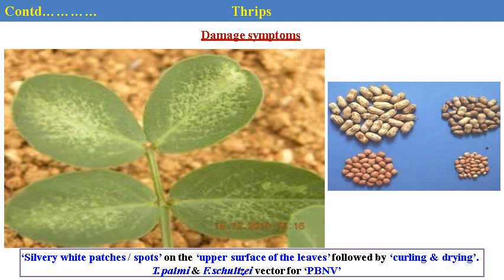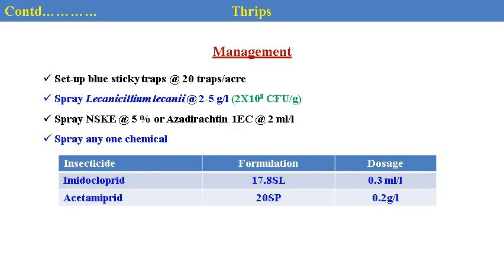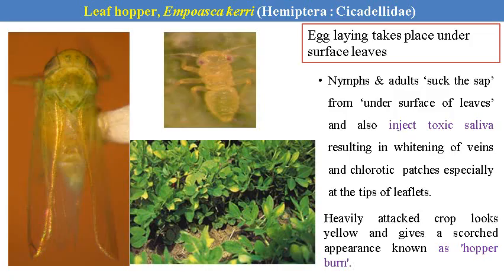Management of thrips: blue sticky traps can be effectively used at 20 per acre. Imidacloprid and acephate are effective chemicals for the control of thrips.